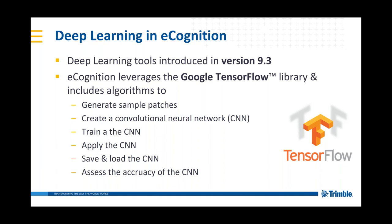We have algorithms to automate the sample patch generation — creating these massive bulks of samples in an automated fashion within eCognition. We also have the algorithm to create the convolutional neural network, that CNN model within eCognition. Once we create that, we have algorithms to train the model, apply the model, and save and load the model so we can transfer it to different eCognition projects. There are also algorithms to assess the accuracy of your CNN and give you feedback on how well this application could be working.